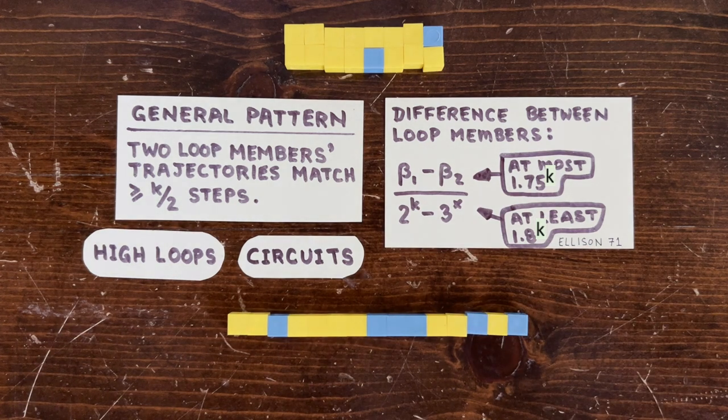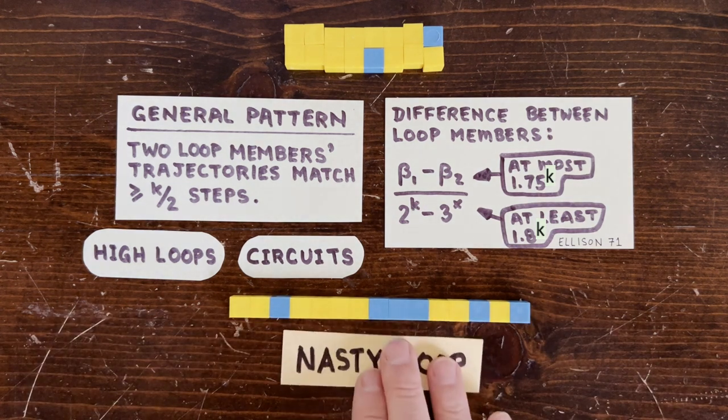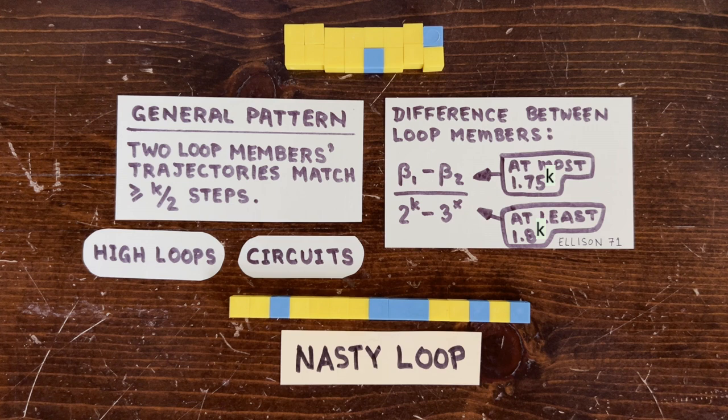And in fact, we can construct a specific loop where it's guaranteed that no two members have similar trajectories. And so we can call that the nasty loop, because it does its best to confound our current method.